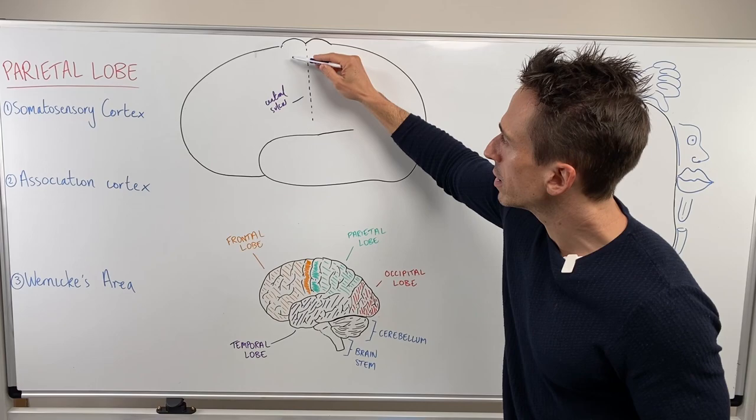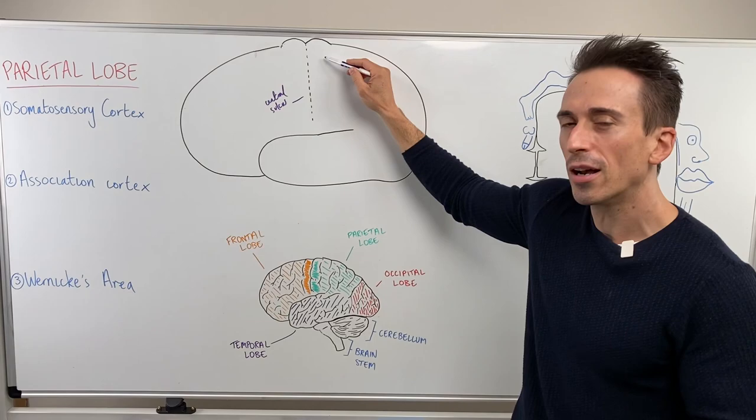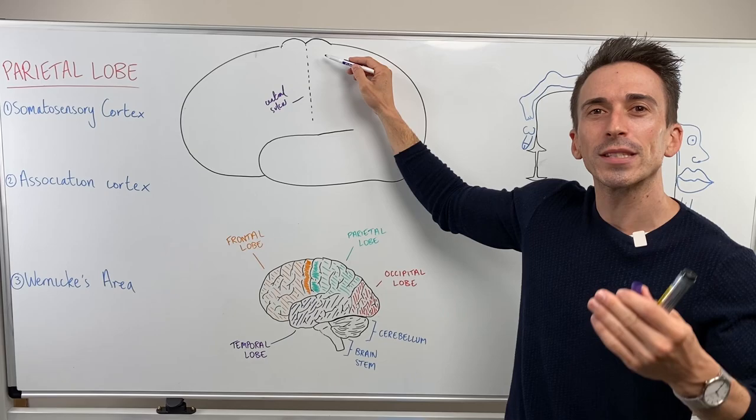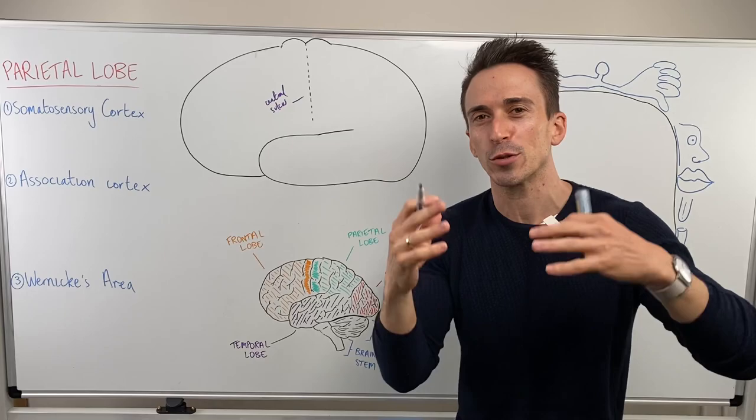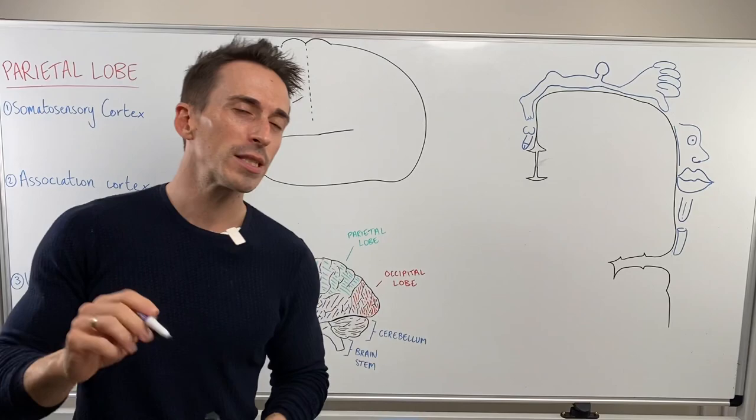When we spoke about the frontal lobe, we said the pre-central gyrus was the primary motor cortex — it has a map of the body of all the muscles that we can consciously move. Now the post-central gyrus of the parietal lobe also has a map of the body of areas that can feel sensation: fine touch, two-point discrimination, proprioception, pressure, pain, temperature — all those things. We have a map of the body right here, and it's called our sensory homunculus.